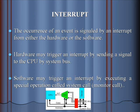Interrupt: The occurrence of an event is signaled by an interrupt from either the hardware or the software. Hardware may trigger an interrupt by sending a signal to the CPU via the system bus. Software may trigger an interrupt by executing a special operation called a system call.